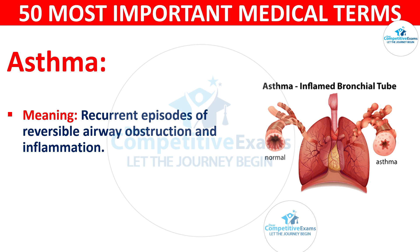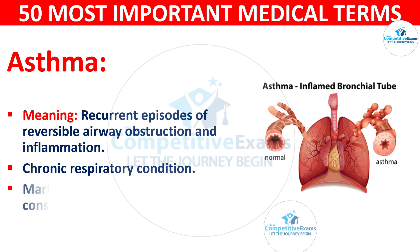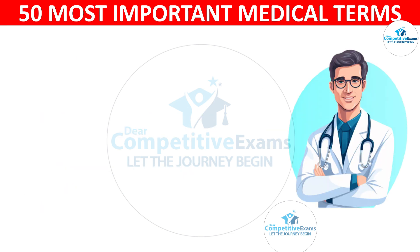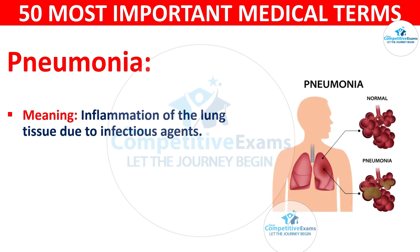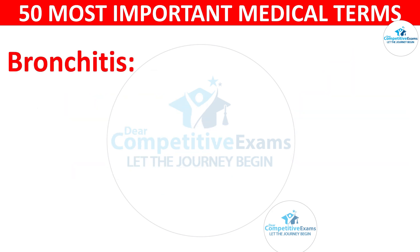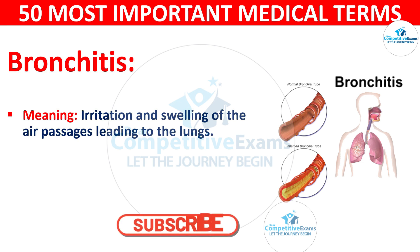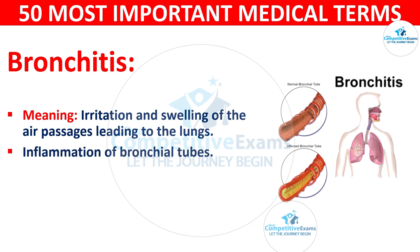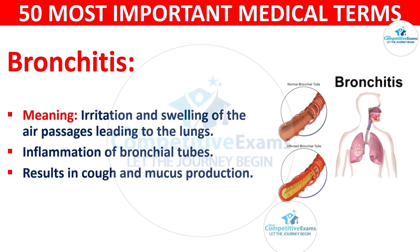Asthma: meaning recurrent episodes of reversible airway obstruction and inflammation. It is a chronic respiratory condition marked by airway inflammation and constriction. Pneumonia: meaning inflammation of the lung tissue due to infectious agents — a lung infection causing cough and difficulty breathing, due to bacterial, viral, and fungal causes. Bronchitis: meaning irritation and swelling of the air passages leading to the lungs — inflammation of bronchial tubes resulting in cough and mucus production.